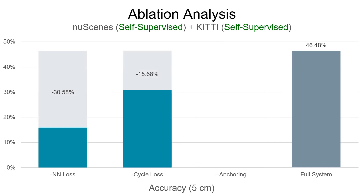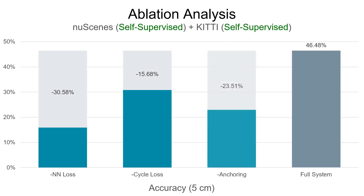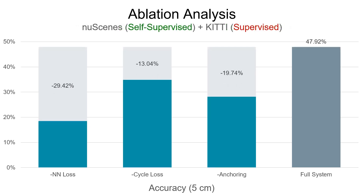Removing the cycle loss results in a 15-point drop, and using nearest neighbor and cycle loss without anchoring reduces the performance by 24 points. These patterns persist when self-supervised fine-tuning is added.